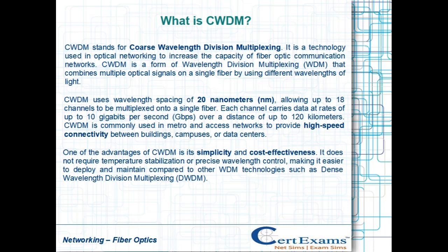CWDM is a form of Wavelength Division Multiplexing (WDM) that combines multiple optical signals on a single fiber by using different wavelengths of light.